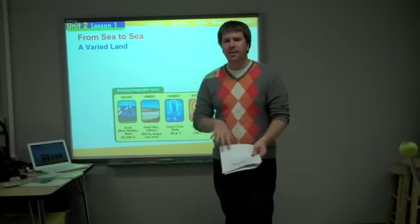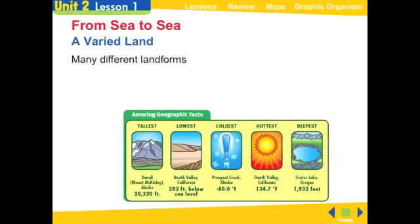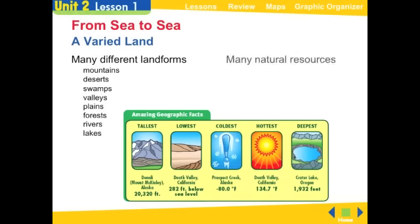The United States is made up of lots and lots of landforms. Landforms include things such as mountains, deserts, valleys, plains, swamps, forests, rivers, and lakes — all of these make up the geography of the United States. We also have many natural resources. A resource is something that we need in order to survive — things like food, water, and building materials.